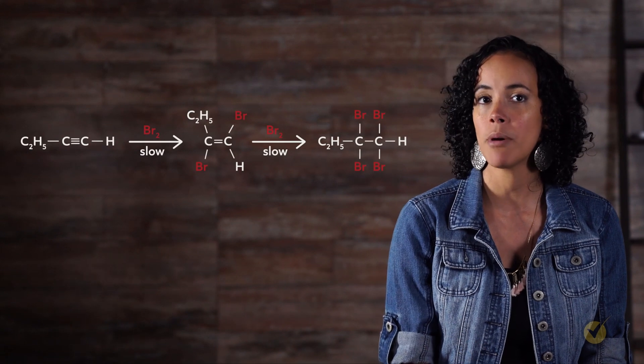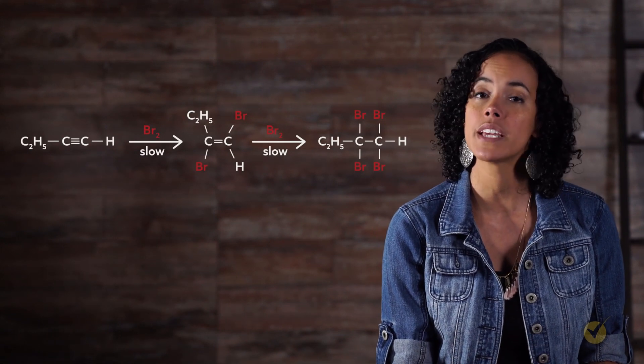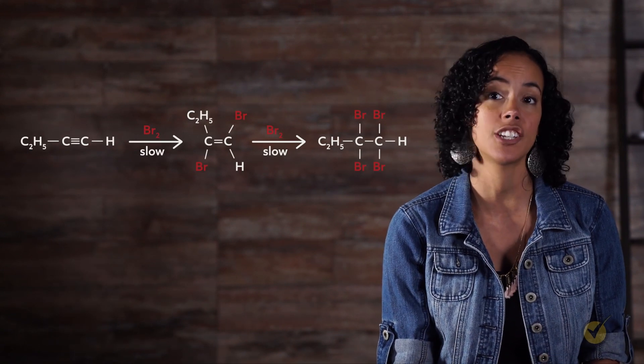For example, the two pi bonds of an alkyne can be replaced with four bromines in this addition reaction. Consequently, alkynes are very useful in organic synthesis because they provide the underlying carbon framework but react readily, thus making the addition of further functionality easier to accomplish.